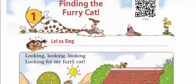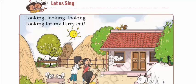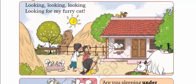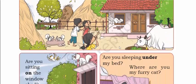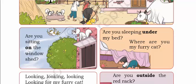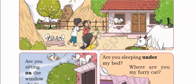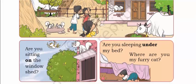Looking, looking, looking for my furry cat — these children are searching for their furry cat. This is their furry cat. Are you sitting on the window shed? See over here, the cat is sitting on the window shed. This is the window shed, and the cat is sitting on it. So these children are asking, 'Are you sitting on the window shed?'